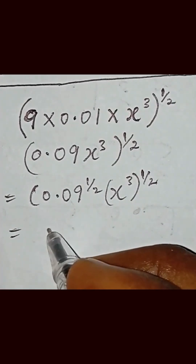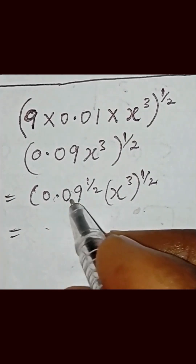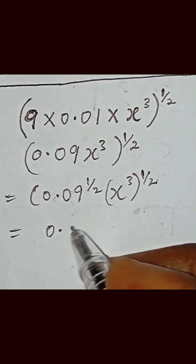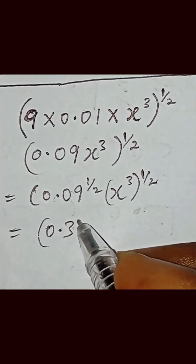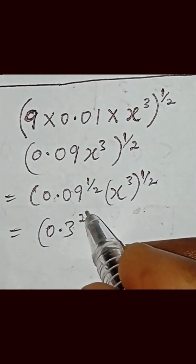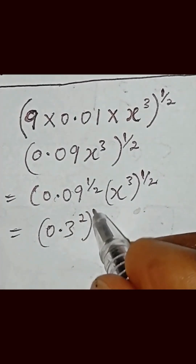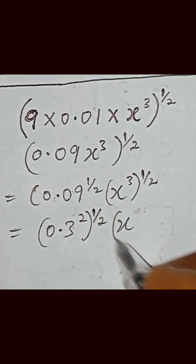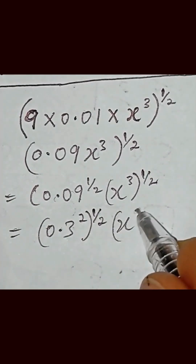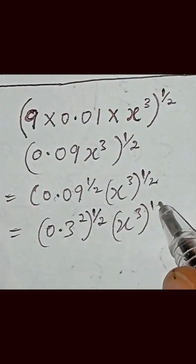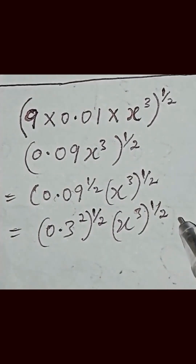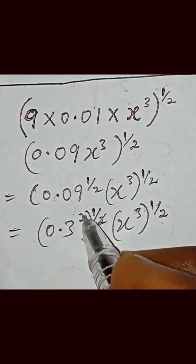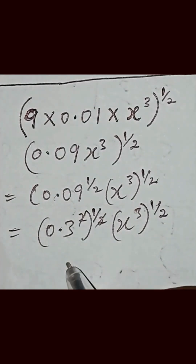If we simplify 0.09, we have 0.3, so that gives us 0.3 raised to the power 2, close the bracket, raised to the power half. Then x inside bracket raised to the power 3, close the bracket, raised to the power half. So we multiply this, and these cancel out, giving us 0.3.